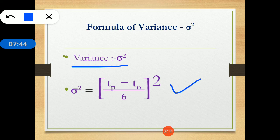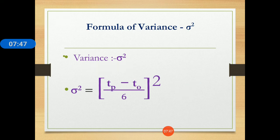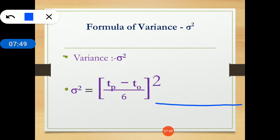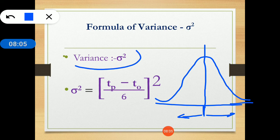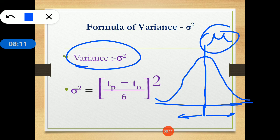Variance is the spread of data. On the normal distribution or beta distribution curve, around the mean, how much the data is spread is the variance — how much your data varies around this mean.